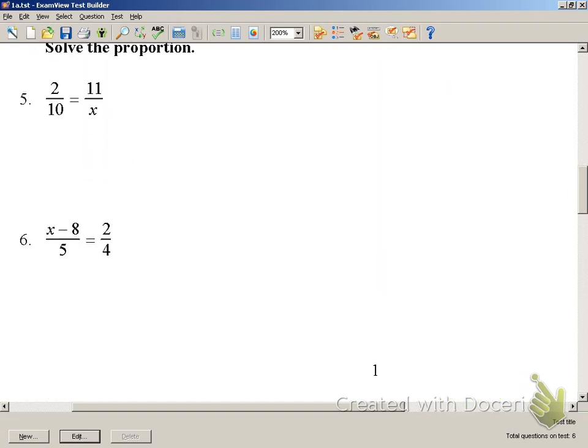Number 5 and number 6, we're solving proportions. With number 5, when we're solving the proportion, make sure that we cross multiply.